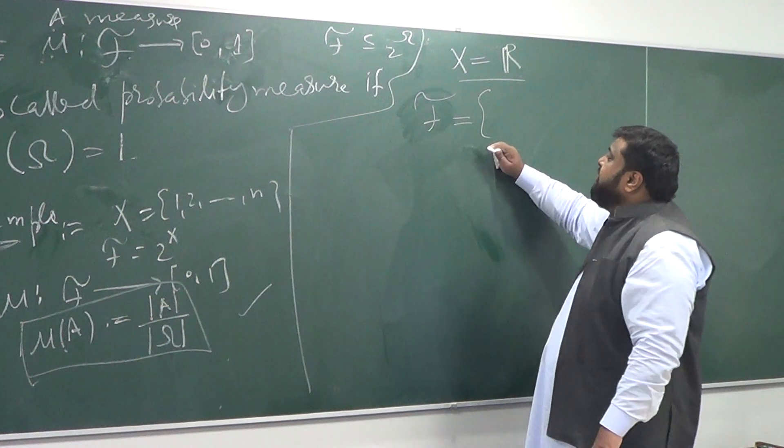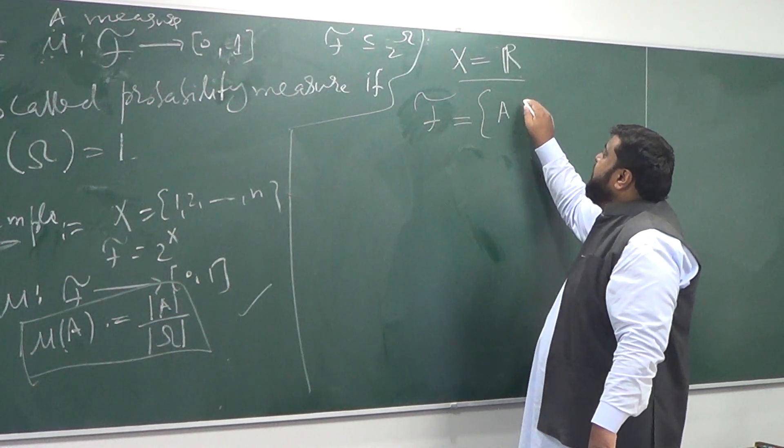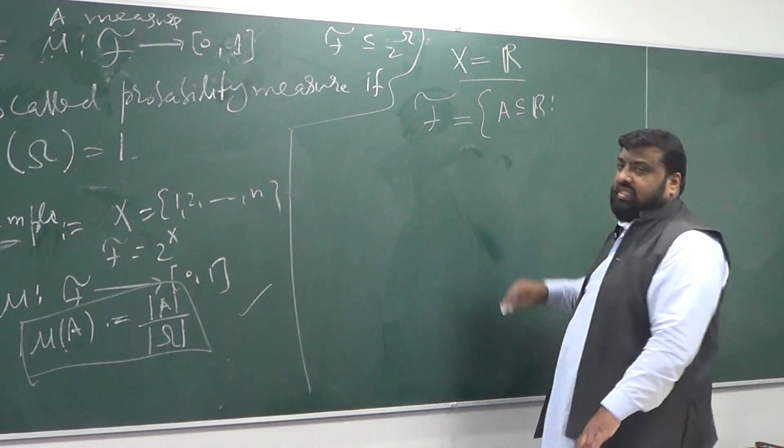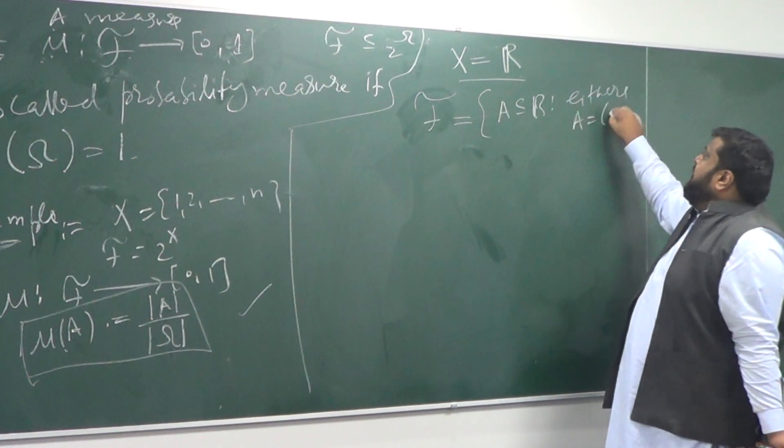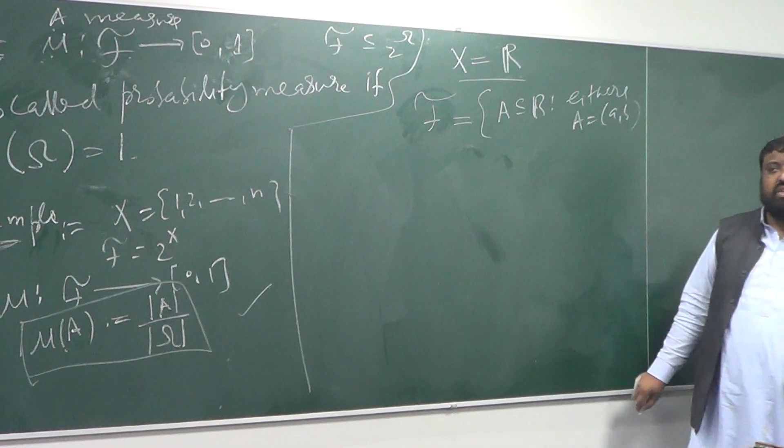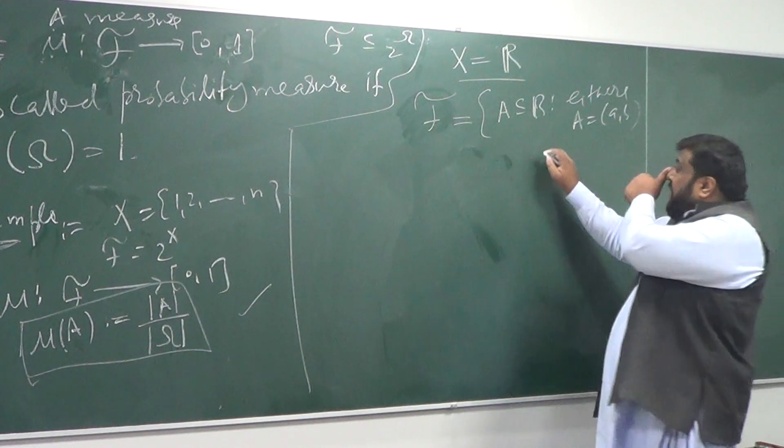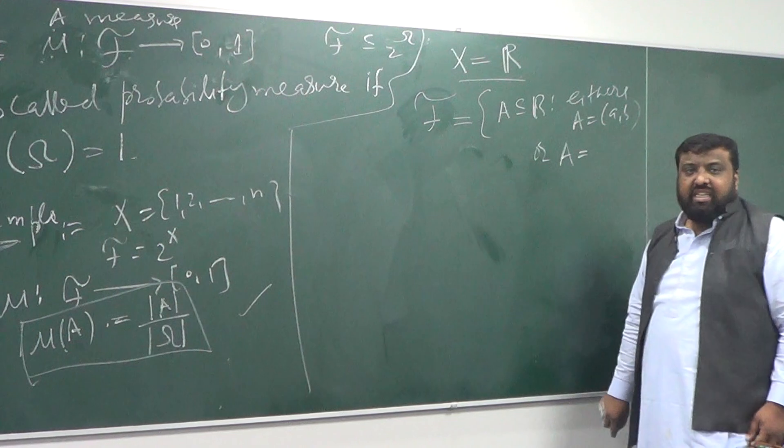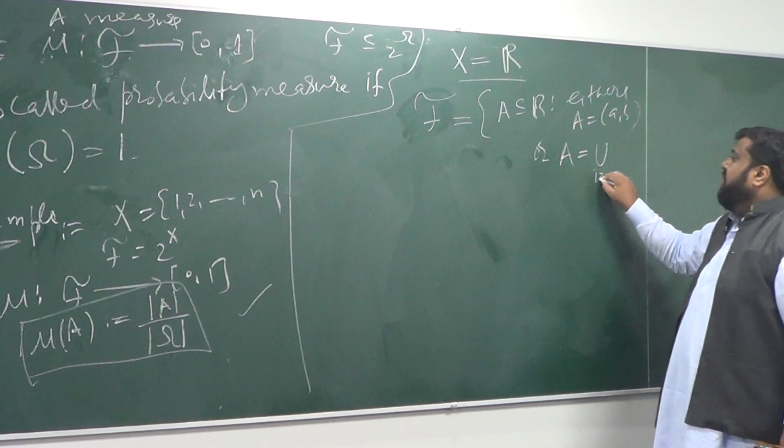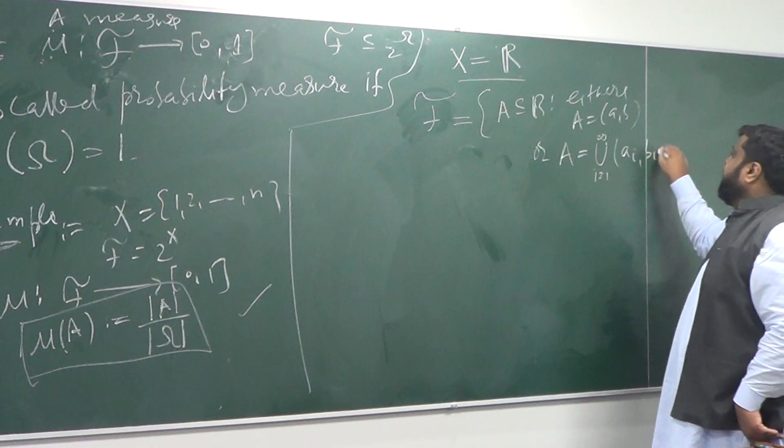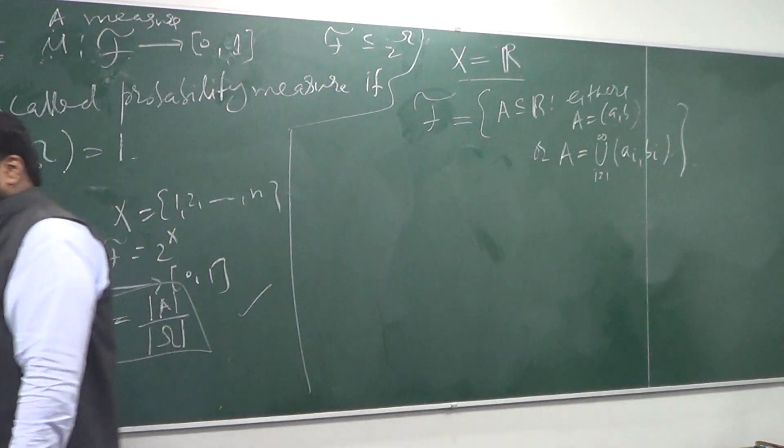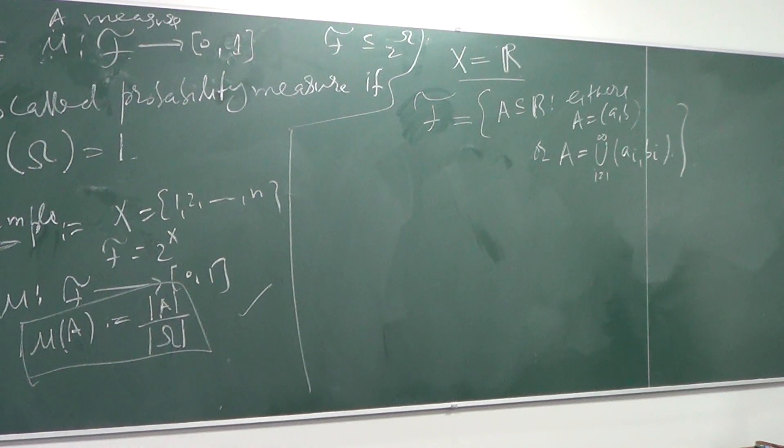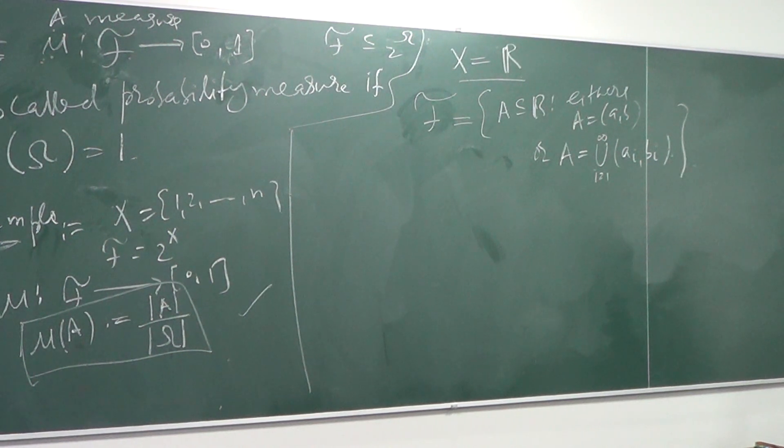F is a collection of all those sets, or maybe the subsets of R, such that either A is an open interval, or A can be written as the union of countable number of open intervals. So, what essentially we have, we have open intervals and the countable union of open intervals, and collection of all those.